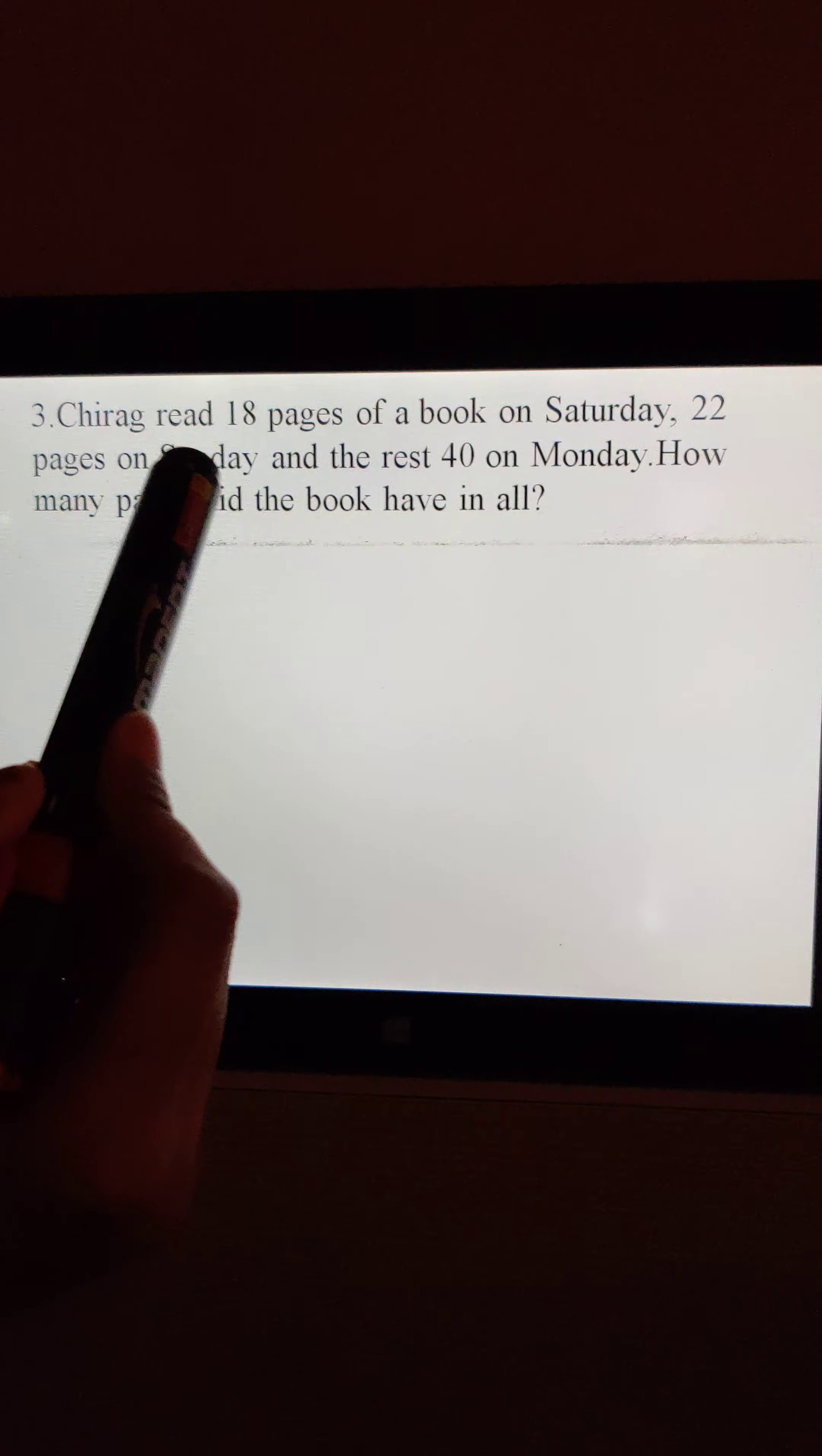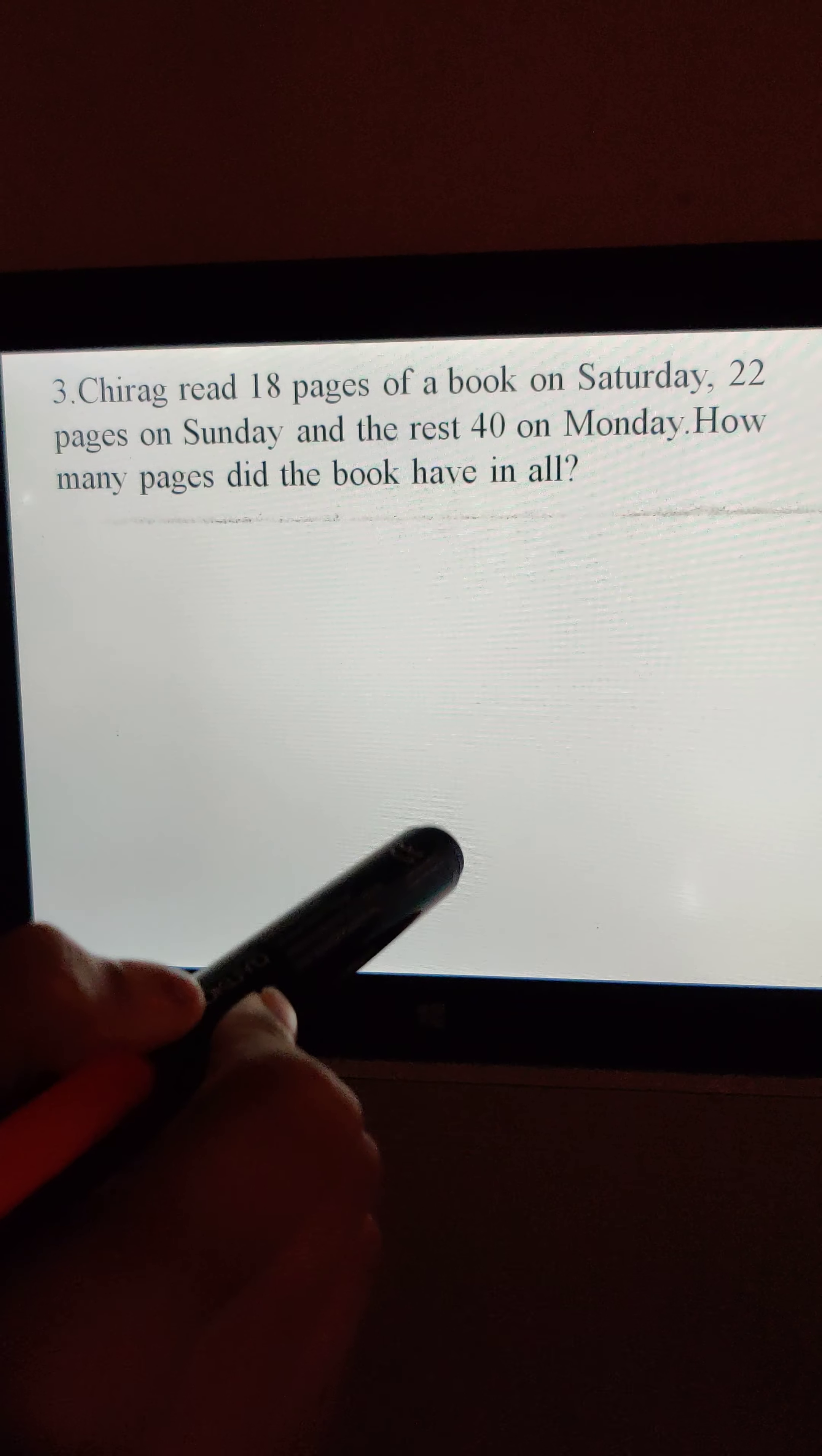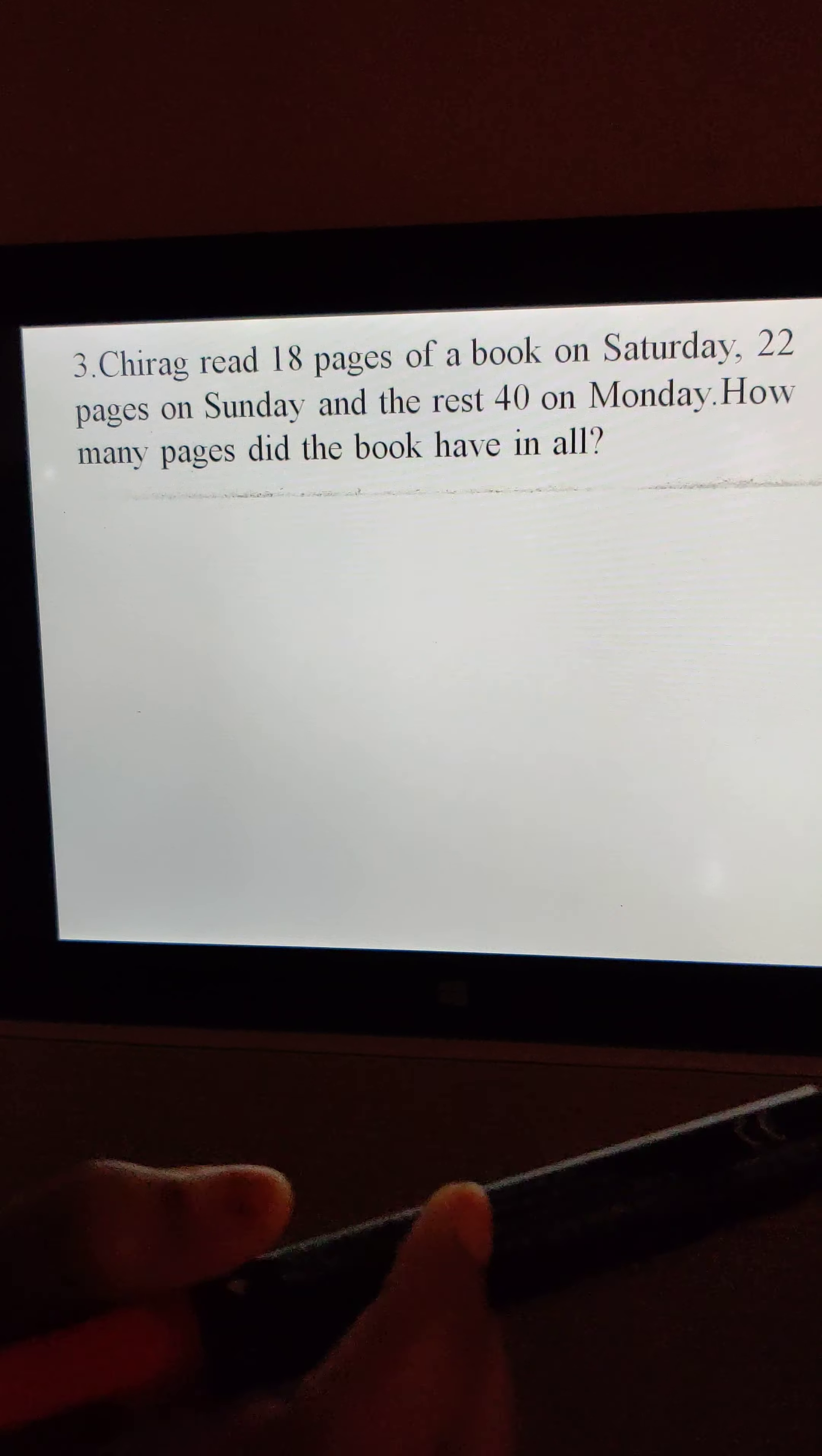So let's practice some more sums. Now third one. Chirag read 18 pages of a book on Saturday, 22 pages on Sunday, and the rest 40 on Monday. How many pages did the book have in all? This boy Chirag, he has a book. He had read 18 pages on Saturday, then 22 on Sunday, and the rest means 40 on Monday. So we need to find out how many pages total are there in that book.